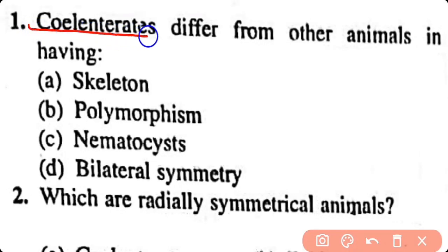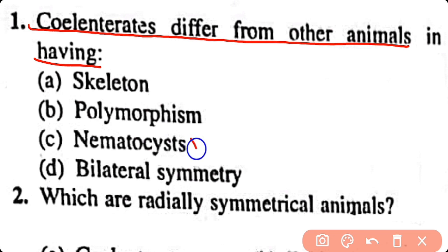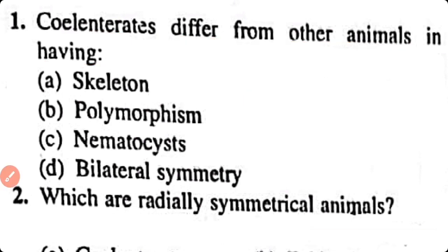Question number 1. Cnidarians differ from other animals in having: skeleton, polymorphism, nematocyst, bilateral symmetry. Option C. Cnidarians possess specialised stinging cells known as nematocysts that are absent in other animals.